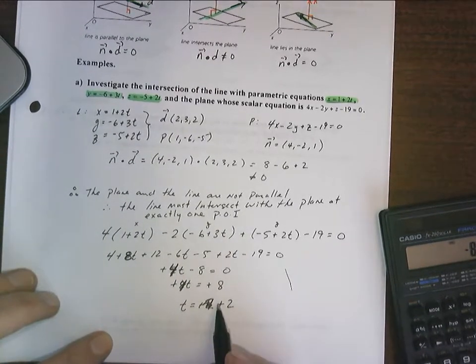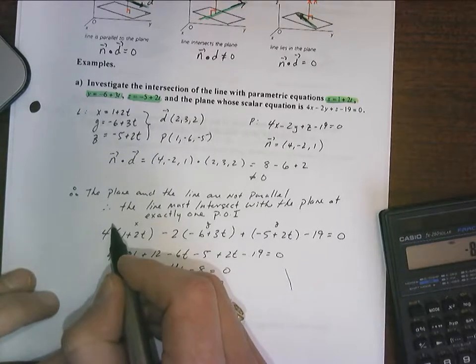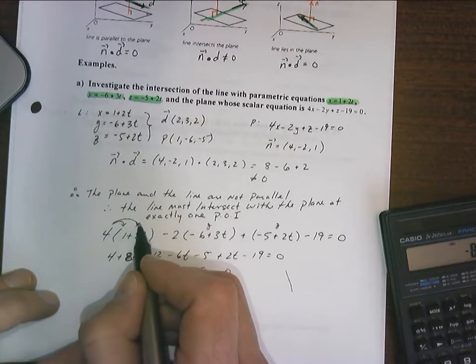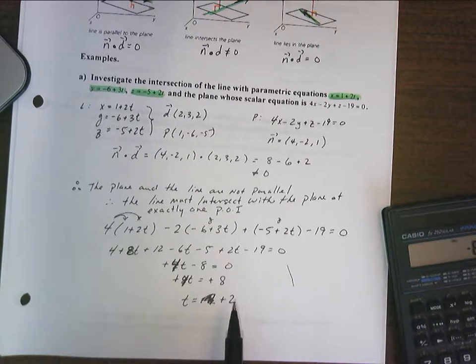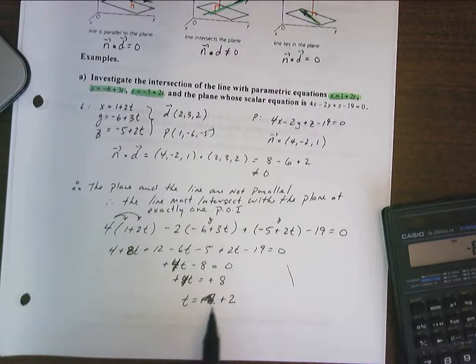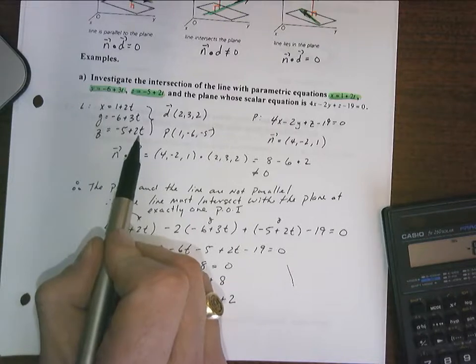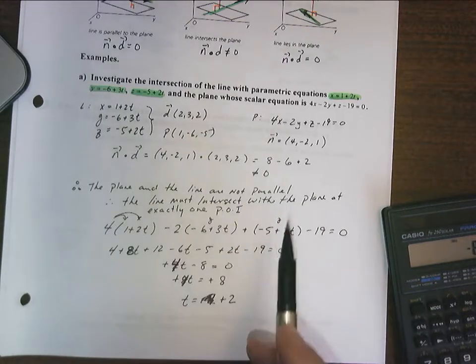Okay, so t equals 2. My mistake, my distributive property didn't work out so well. So t equals 2, and what that means is that this is the single value of t that will take me to the point of intersection between this line and this plane.